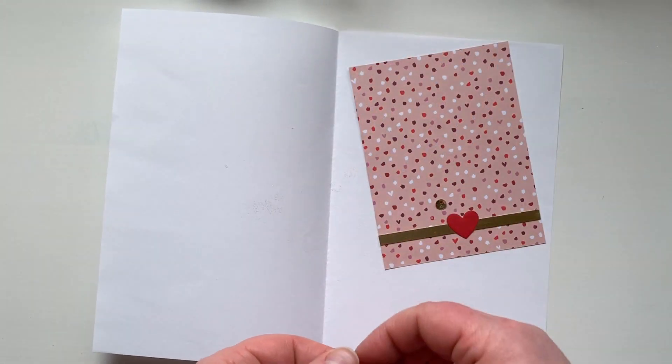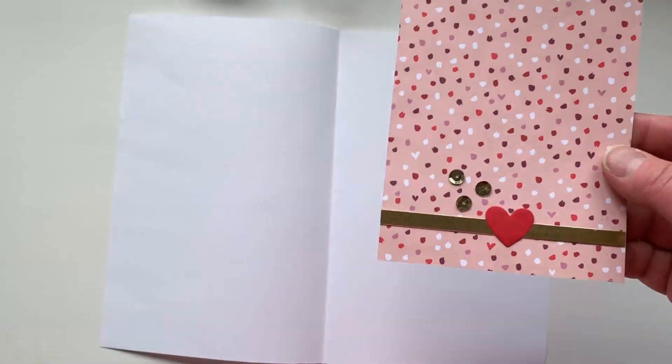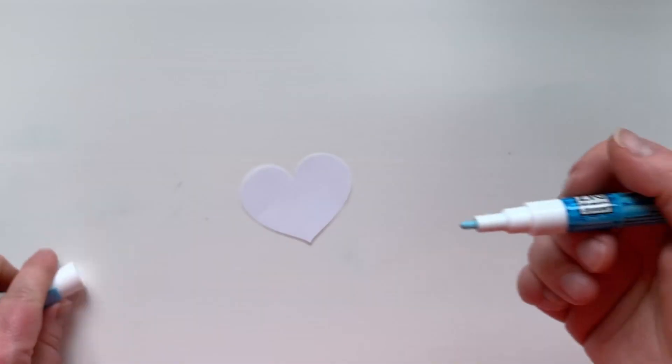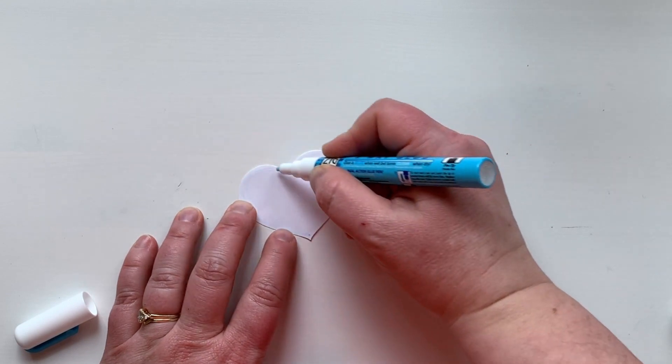I can also use this glue to add embellishments such as these sequins. Now I'm going to take the glue and make a mask. So I apply the glue around this heart that's die cut from some printer paper.